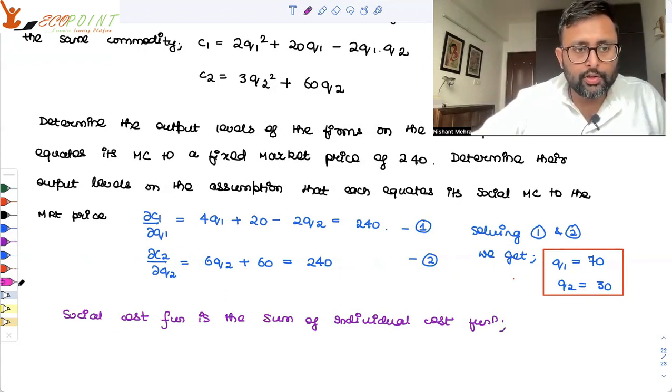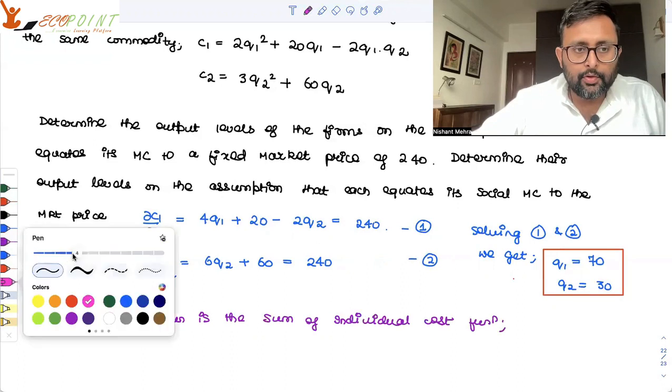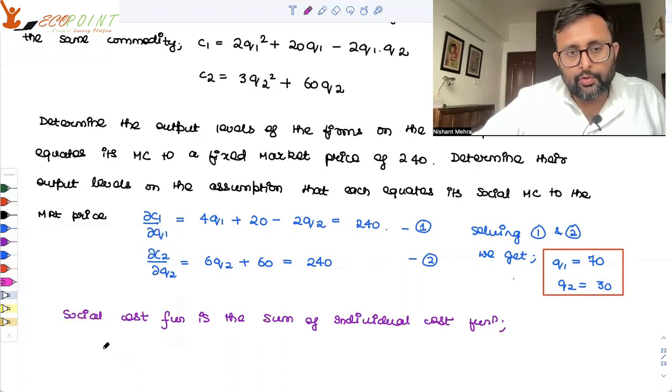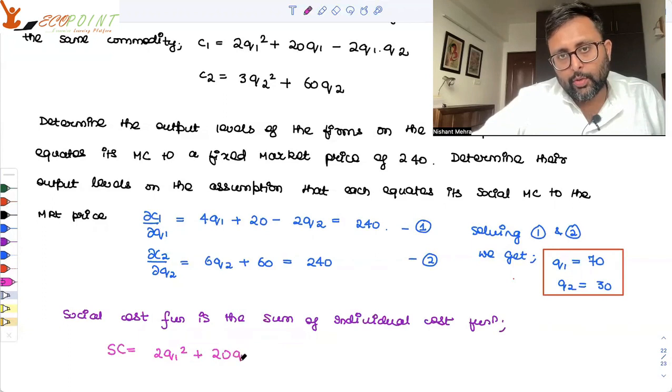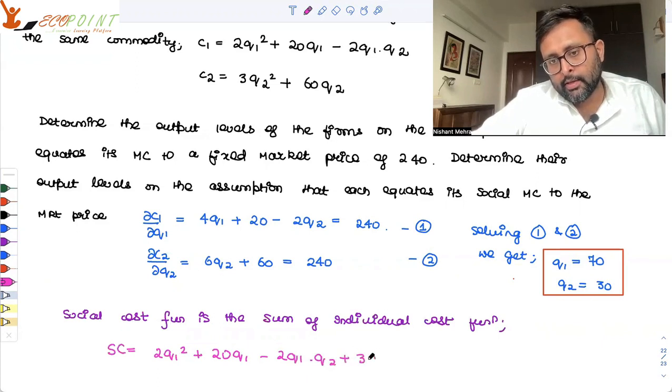So what is going to be your social cost function? It is going to be 2Q1 square plus 20Q1 minus 2Q1Q2 plus 3Q2 square plus 60Q2.